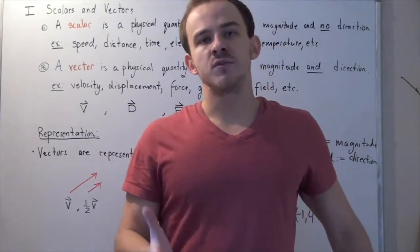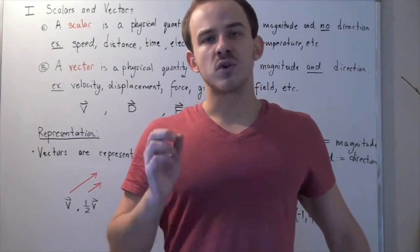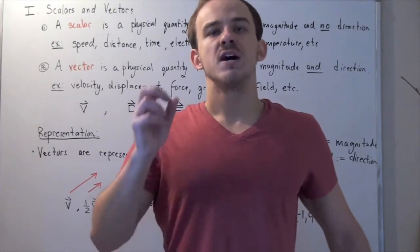So in physics, whenever we want to describe an object or a system of interest, we describe that object using different types of physical quantities.